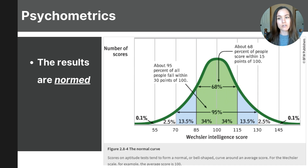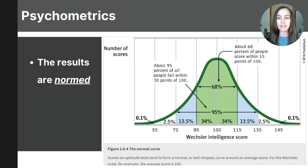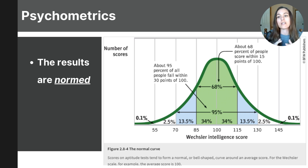Another factor of standardization is norming. If a test is normed, the test creators started by giving their test to a large representative sample of people to find out what was normal or average in relation to the scores. By testing a large diverse sample group, the test makers can see how most people score, helping them determine what is considered average and what scores are less common. Once they have this sample data, they can create a normal distribution curve or bell curve so that future test takers can compare their scores to this curve and see how they measure up against the average.